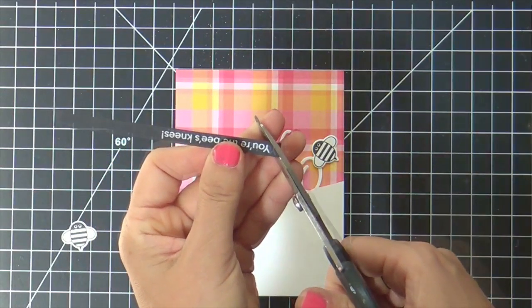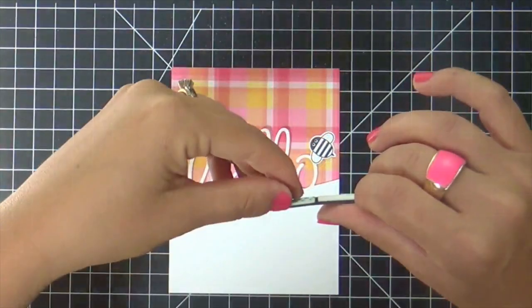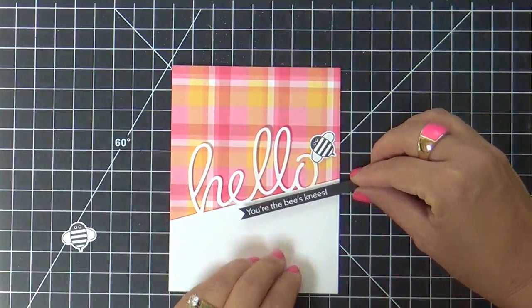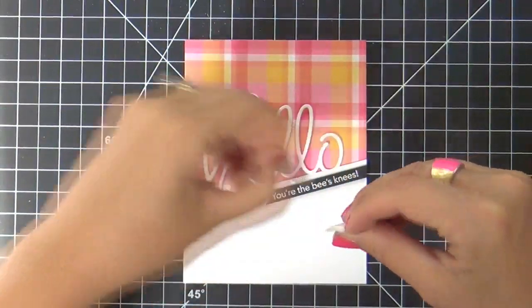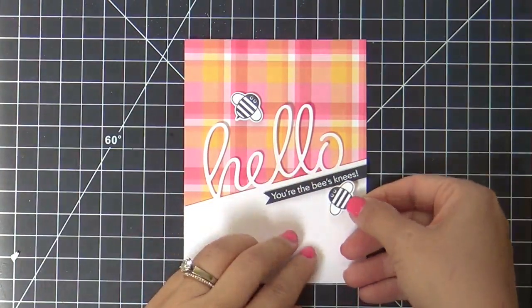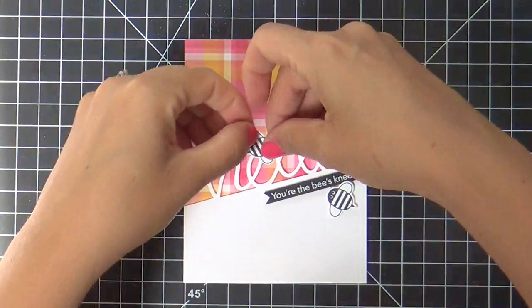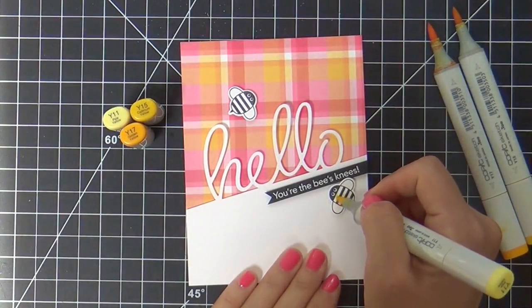And I'm going to cut a little fishtail end on the end of my sentiment strip and pop it up with foam tape right along that angle of the partial die cut panel. And then I'm going to pop up the bees, the bees knees. So I did two bees and I thought I was doing good and I was happy and everything was working out the way it should.